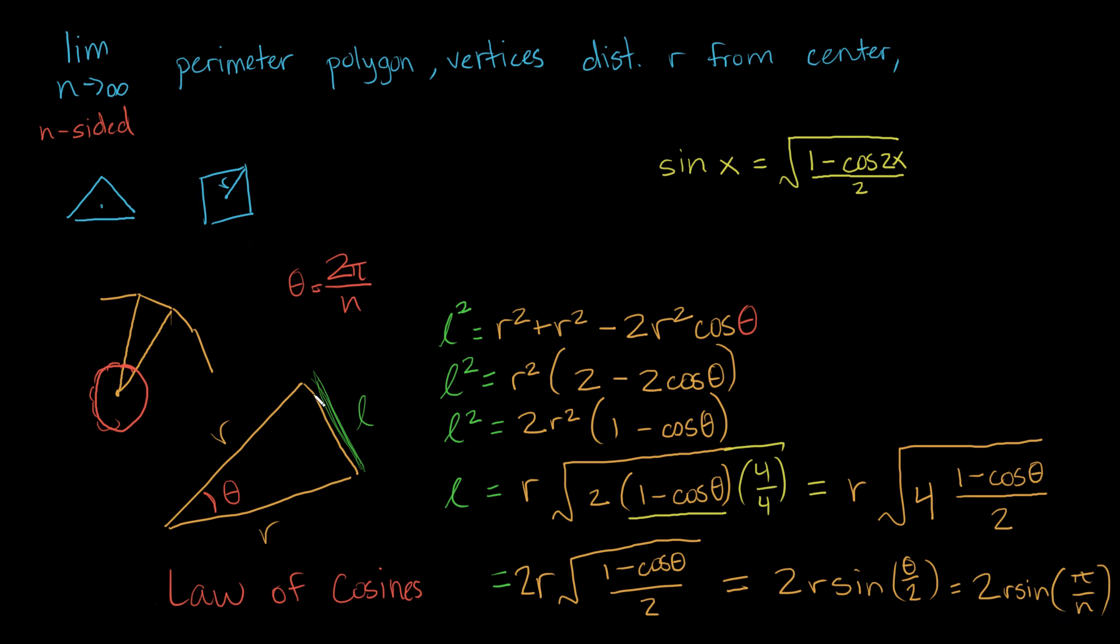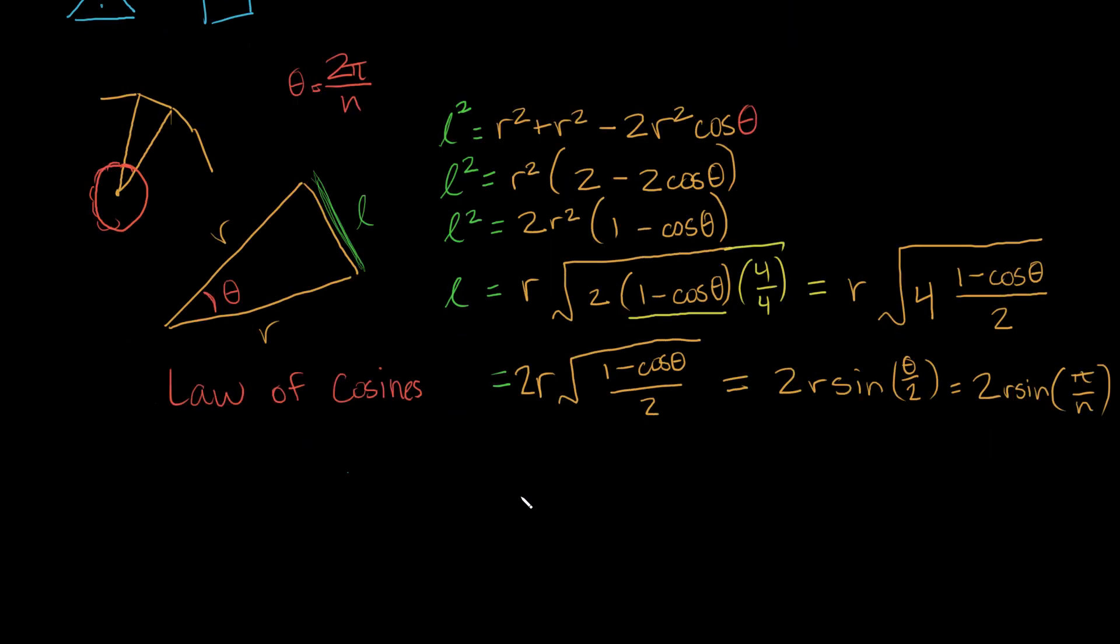Now that we've solved for each of these little l's, what we need to do, if we're going to calculate the perimeter of the entire polygon, is say, how many of these length l's are there? There are n. So we know that the perimeter of the entire polygon is going to equal n times each l, which is going to equal 2rn sine of π over n. Remember, this is the perimeter of any arbitrary n-sided polygon with vertices distance r from the center. And I'm assuming that the vertices are equally spaced, to be clear.